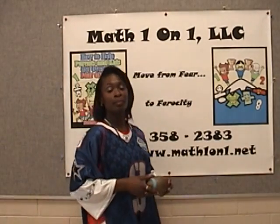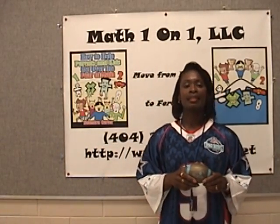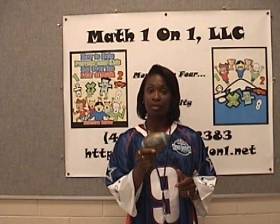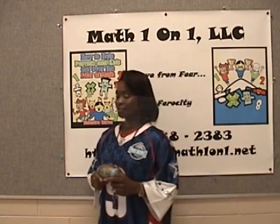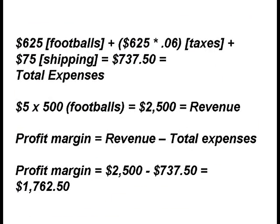I have another math problem for you. Let's say that your school fundraising committee wanted to sell souvenir footballs such as this one. The committee was able to find a manufacturing company to manufacture 500 footballs at a cost of $625. The tax would be 6% — you'd find that by multiplying 625 times 0.06. The shipping would be $75. The total expenses would be $737.50.